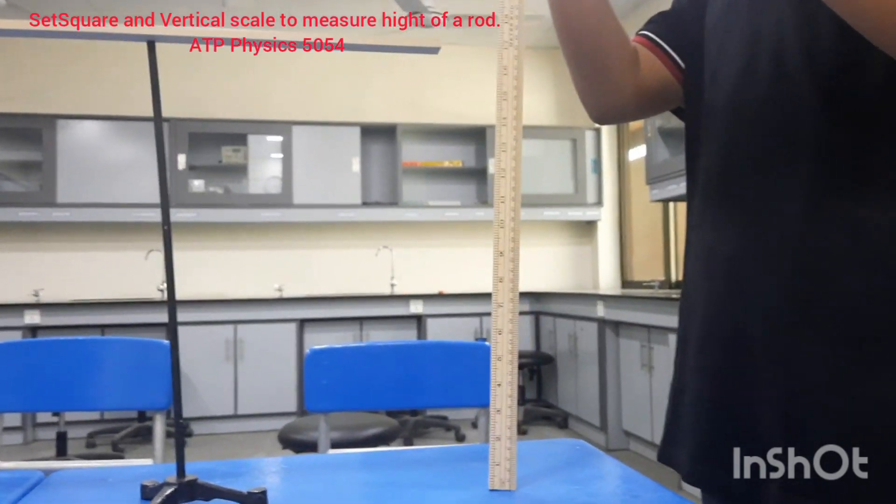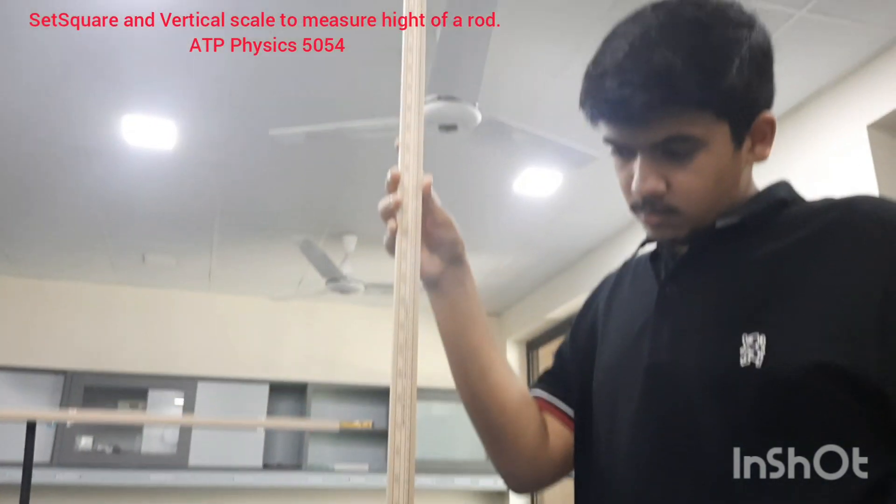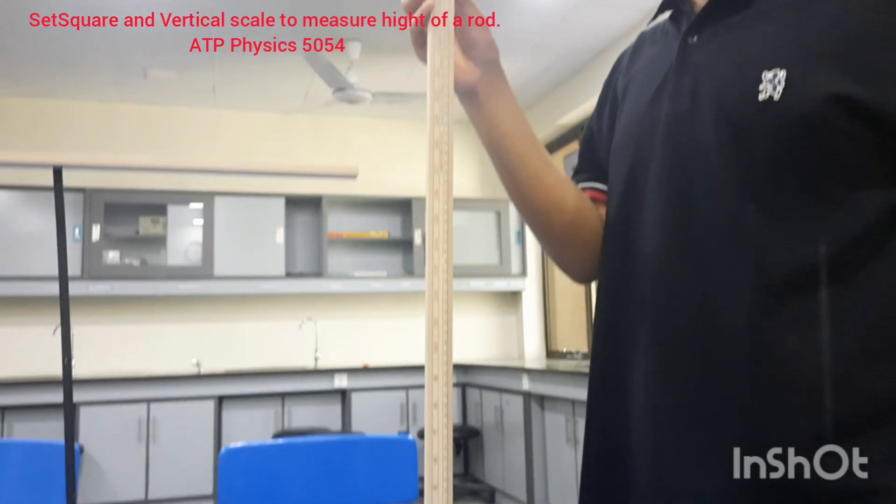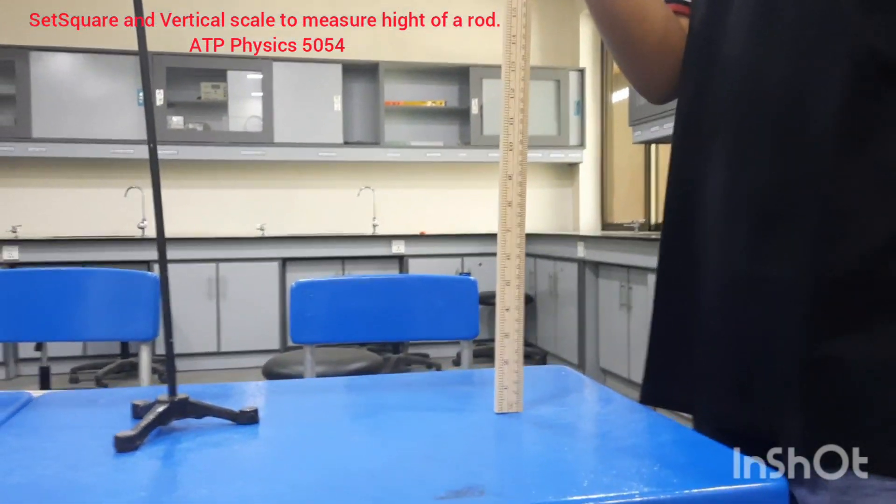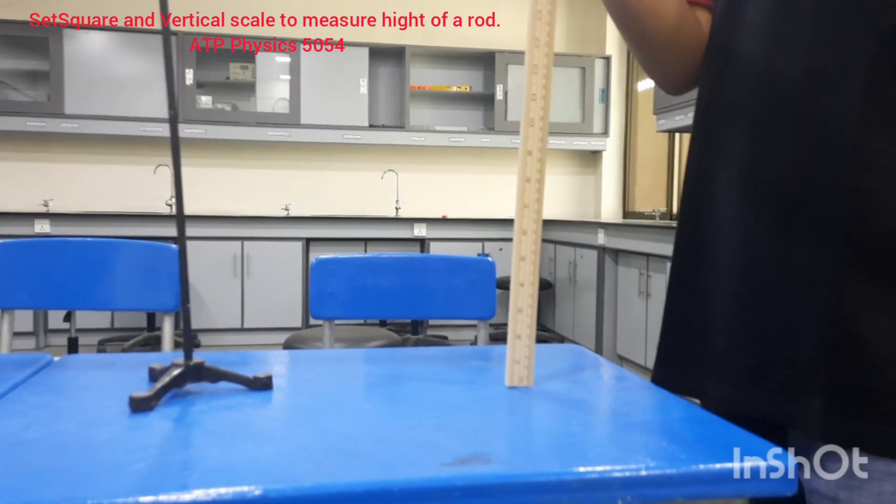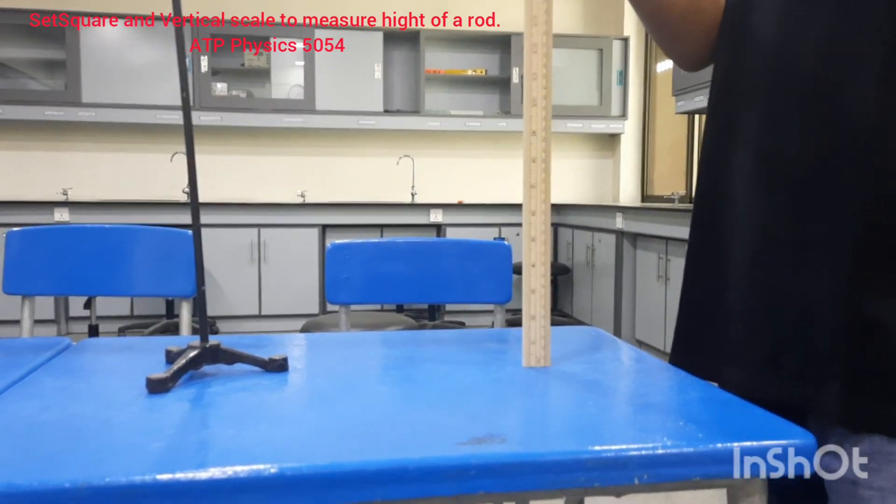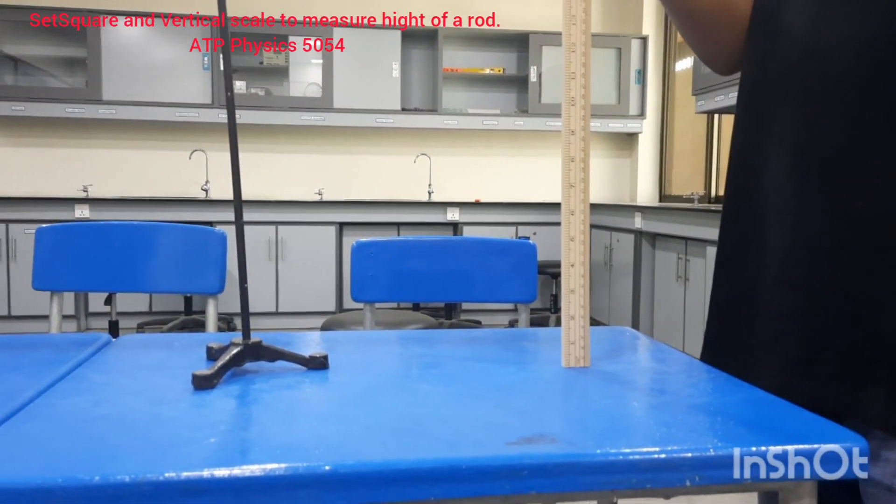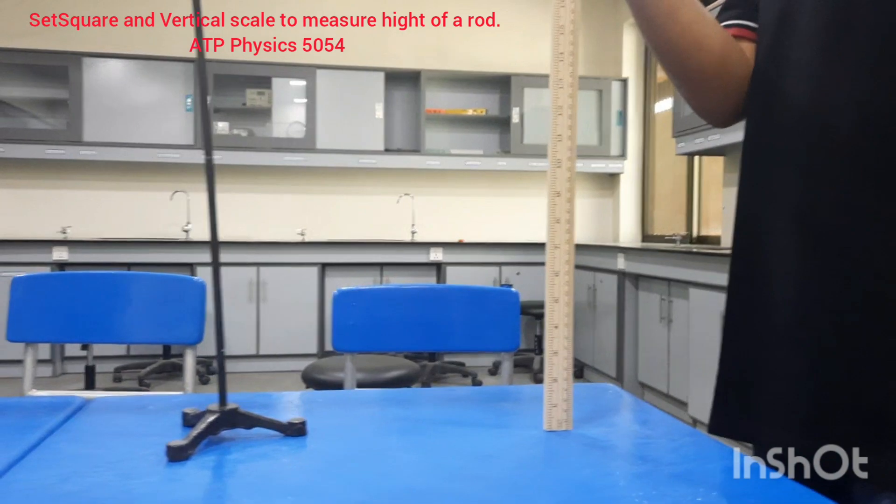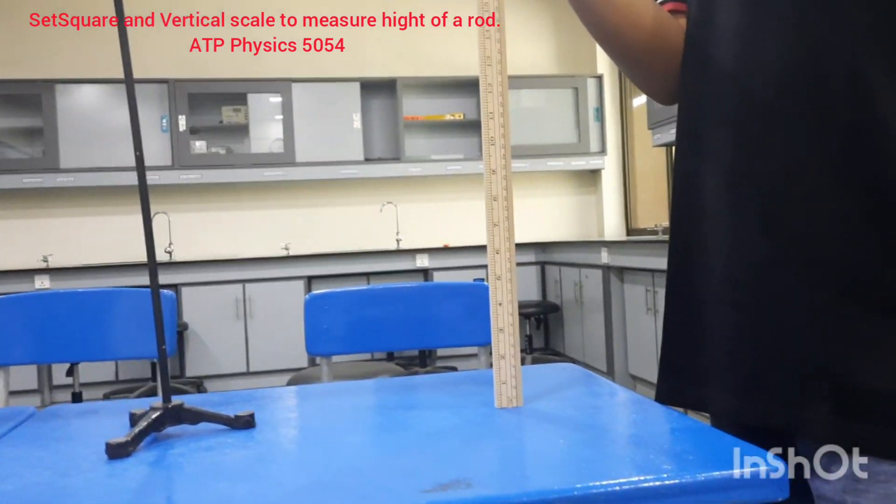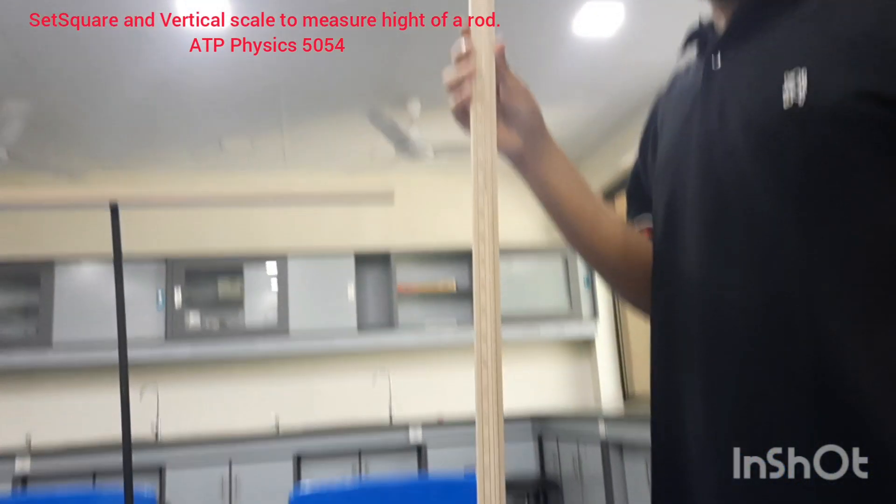When you place this vertical rod, the problem is that when you hold this vertical rod, it might be vertical to the bench or it might not be vertical. Whenever you hold it, it's possible that you tilt this a little bit. When you are holding it, this might be little tilted.